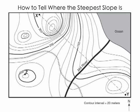Let's talk about how we can determine where the steepest slope is using a topographic map. Here's a fairly complicated topographic map. We have several index contours — two 200 index contours and one 300 index contour. We have a river flowing into the ocean, what looks like railroad tracks, and two points X and Y.